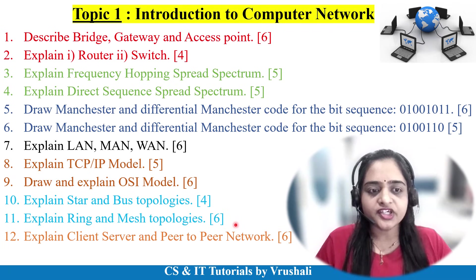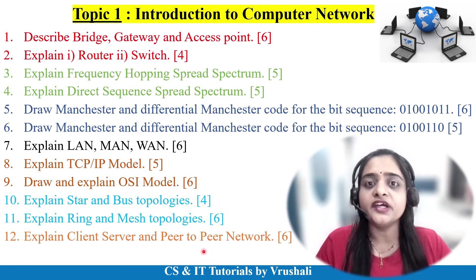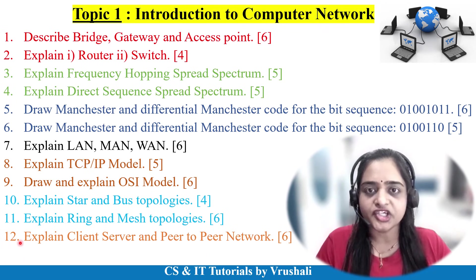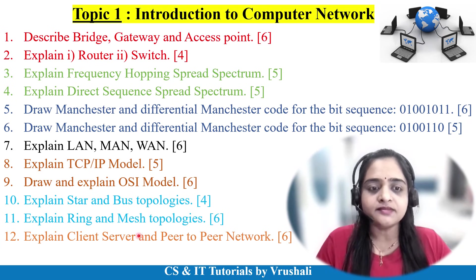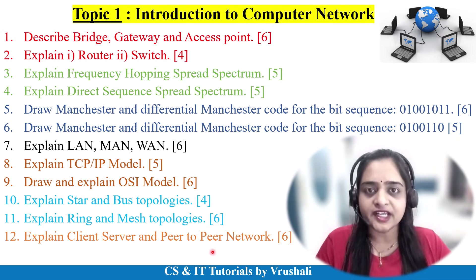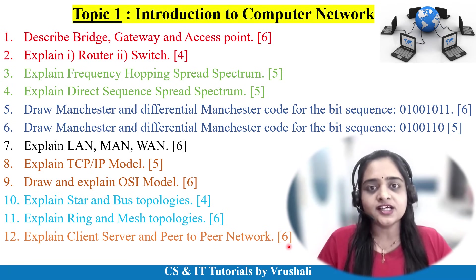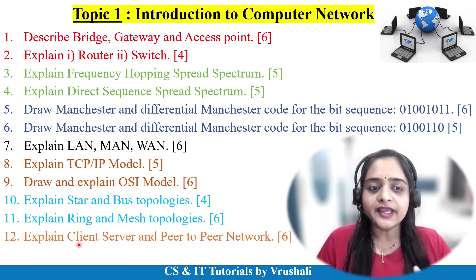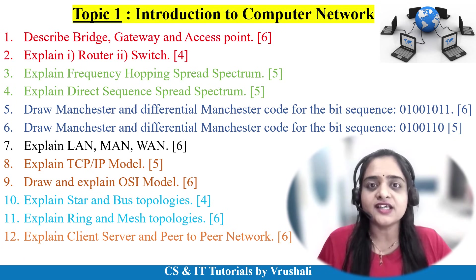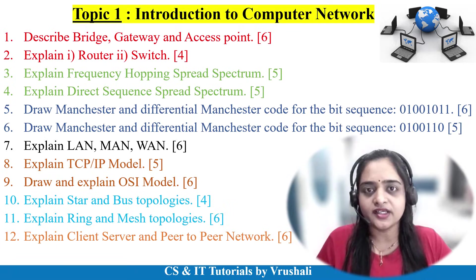The last question in this unit is to explain client-server or peer-to-peer network architecture. Draw the diagram for each — both architectures may be asked for 3 marks each, totaling 6 marks. Sometimes only the client-server network architecture with diagram is asked, which carries 8 marks, so prepare accordingly.